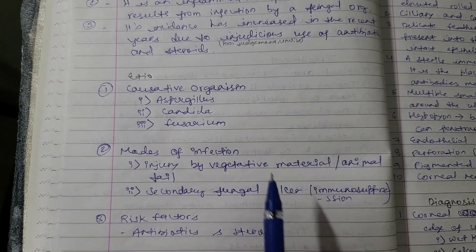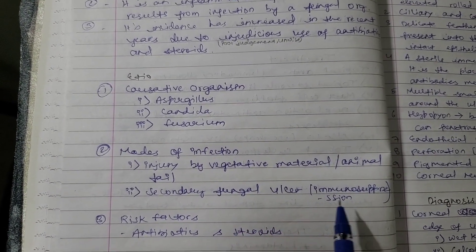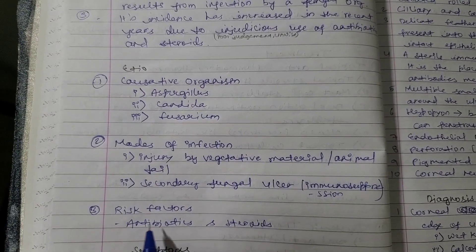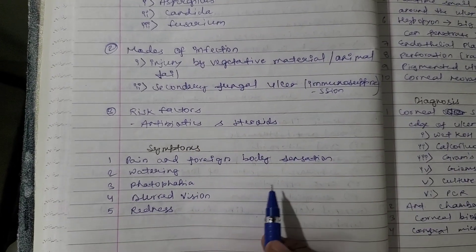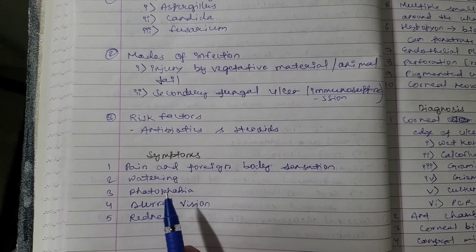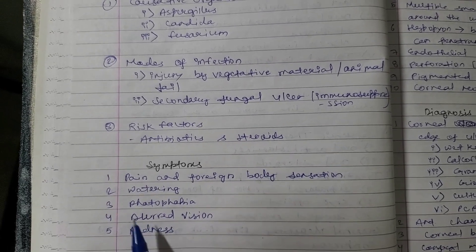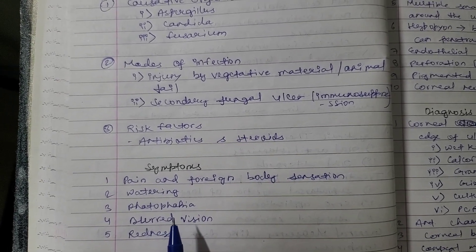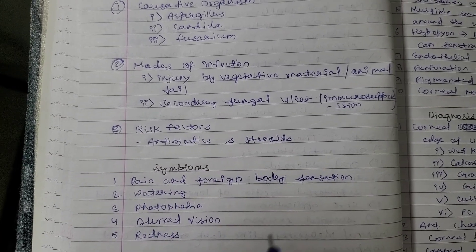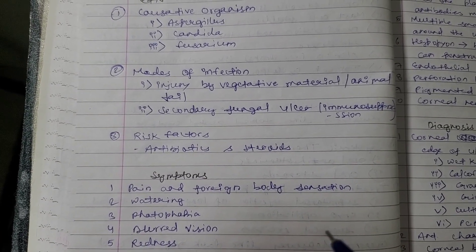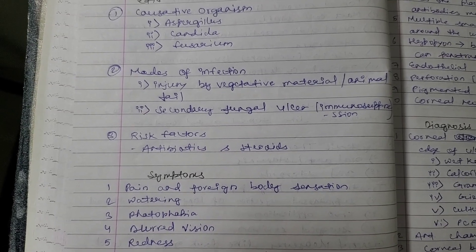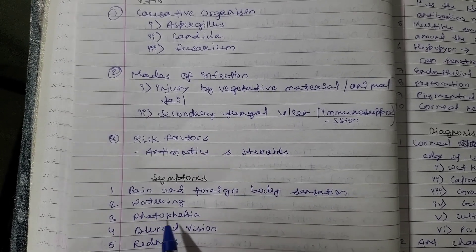Secondary fungal infection can occur via immunosuppression. Risk factors include antibiotics and steroids. Symptoms are: pain and foreign body sensation, watering, photophobia, blurred vision, and redness. Photophobia means discomfort in bright light, such as from car headlights or sunlight.